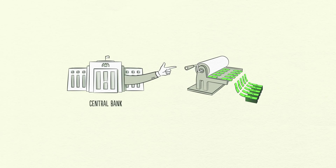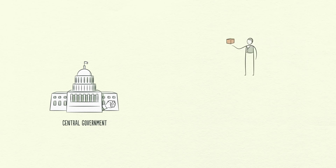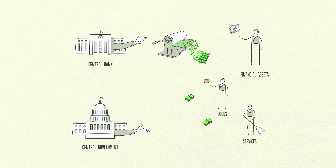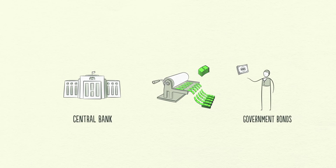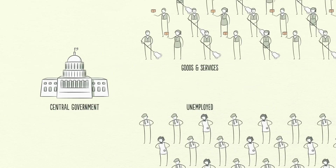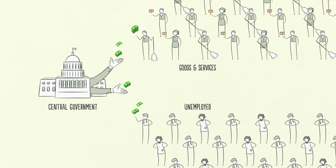The central bank can print money, but it can only buy financial assets. The central government, on the other hand, can buy goods and services and put money in the hands of the people, but it can't print money. So in order to stimulate the economy, the two must cooperate. By buying government bonds, the central bank essentially lends money to the government, allowing it to run a deficit and increase spending on goods and services through its stimulus programs and unemployment benefits. This increases people's income as well as the government's debt. However, it will lower the economy's total debt burden.